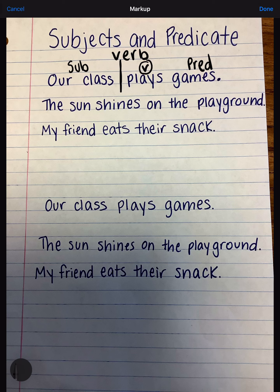Let's look at our second sentence. The sun shines on the playground. Which word is the verb? The action word. In this sentence, shines is the verb. So where should we draw our line? We should draw our line before the word shines. The sun is the subject. Shines on the playground is the predicate.